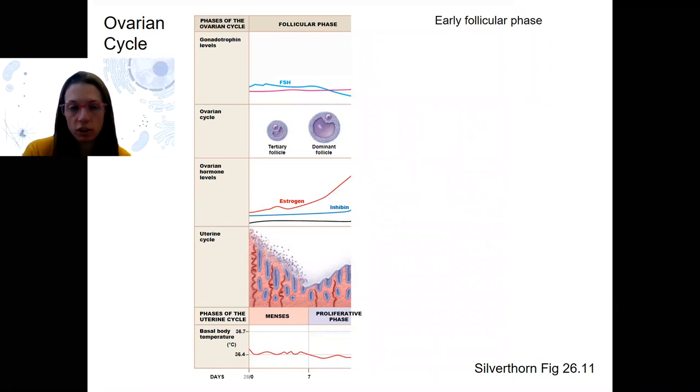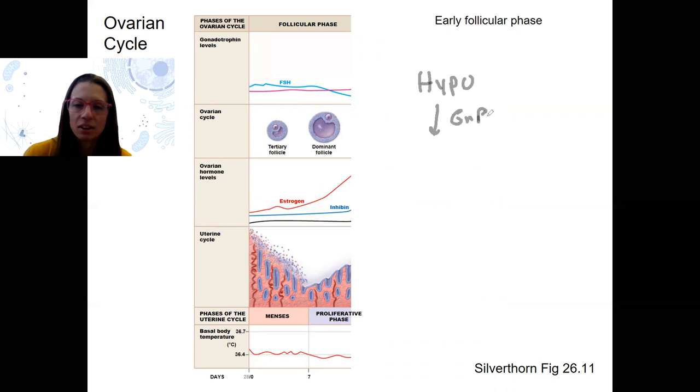We'll start with early follicular. So this is the phase before ovulation when estrogens are increasing before the LH surge. So we're going to draw out our hypothalamic pituitary gonadal axis. And you should be able to do this in your sleep. We're going to target the ovary. Specifically at this time point, it's the follicles that are developing. The follicles are present, as opposed to there's no corpus luteum at this point.